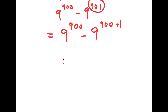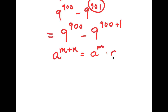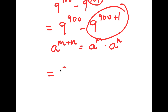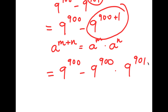Now, there is an important exponential property that you should know. If I have something in the form a to the power of m plus n, this is equal to a to the power of m times a to the power of n. So in this case, we have 9 to the power of 900 plus 1, and using this property, we can rewrite it as 9 to the power of 900 times 9 to the power of 1.